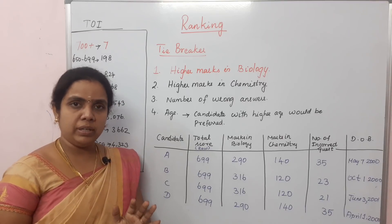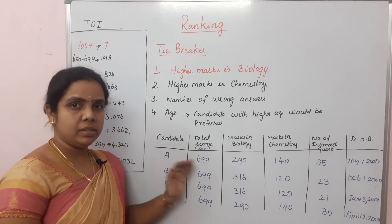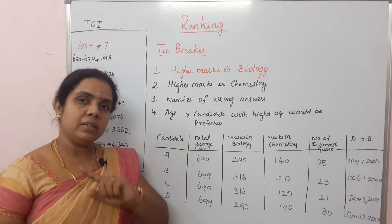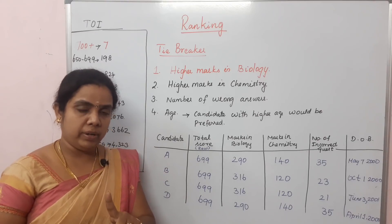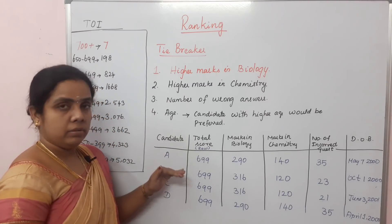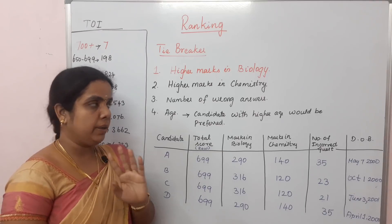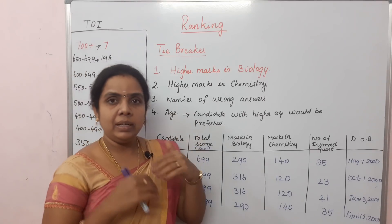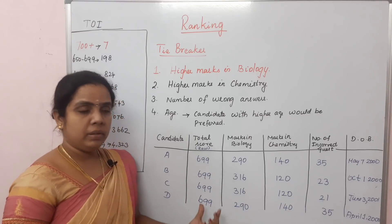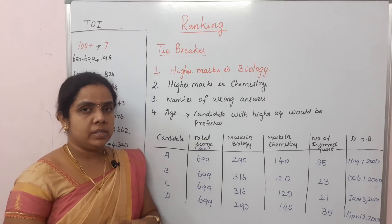Tiebreaker number 1 is Higher Marks in Biology. For example, if you have 4 students with the same total marks, whoever has the higher marks in Biology gets the better rank. So the student with the highest biology marks gets rank number 1. That is the first criteria.